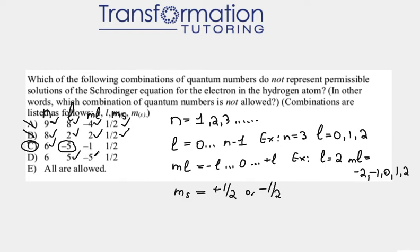If my l is 5, could my ml be minus 5? ml goes from minus l to plus l. Minus l is minus 5. So that works. And my ms has to be either plus 1 half or minus 1 half. And in this case, it's plus 1 half. So it works also. So d is wrong as well.